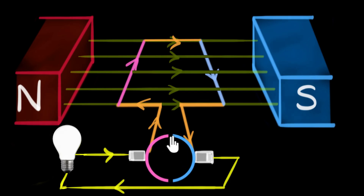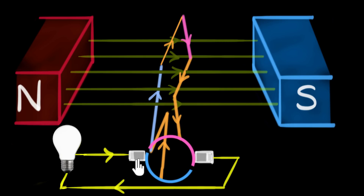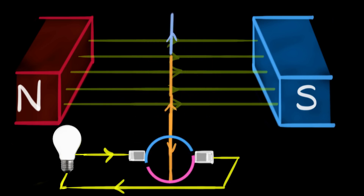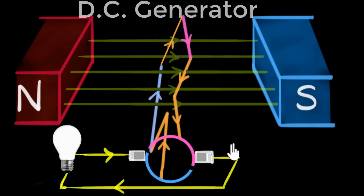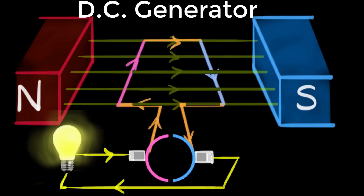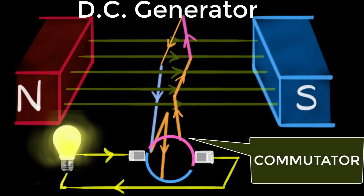We can achieve this by attaching split rings. A split ring, as the name suggests, is a ring split in between, giving two half-rings with a gap. This arrangement automatically changes contact for every half rotation: when the current reverses as the coil rotates, the brush automatically switches to the other half-ring, ensuring the current still flows in the same direction through the bulb. This is called a commutator — split rings act as commutators — and this is how we build a DC generator, where current only flows in one direction through the external circuit.